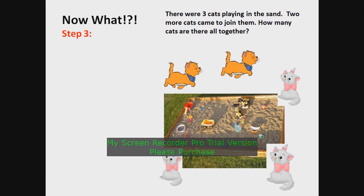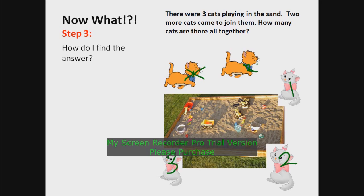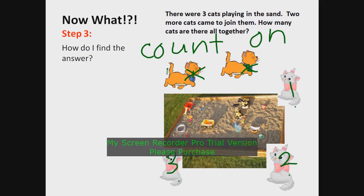Okay, we've got our parts of our story. Now, figure out how to find the answer. So we know that there were one, two, three cats playing in the sand. Remember the second part — two more cats came to join them. We don't want to write one and two; we want to count on. So we go one, two, three — this one will be number four, this one will be number five. So you can count on. That's one way.